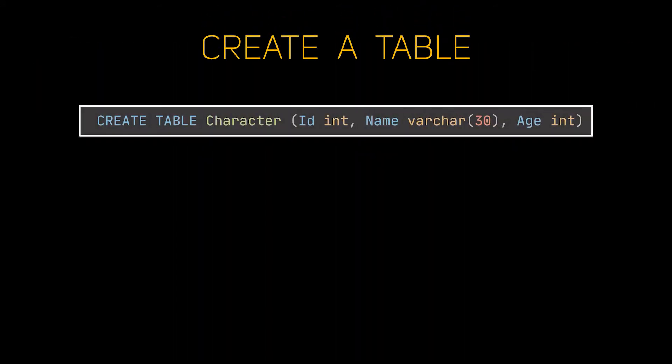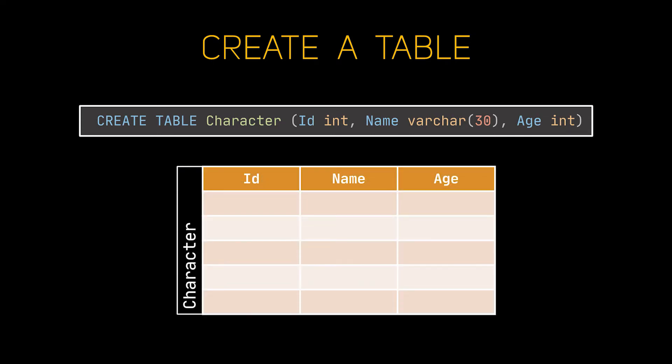This statement will allow us to create a table in our database, and it expects the name of the table along with the columns we want to create and their respective types as arguments. As you can see here, we are creating a table named 'character' with three columns: the id of type integer, the name which is a string having 30 characters at max, and the age of type integer also. If you need to create a column with type double, you have to specify float in there because the double keyword is not a thing in SQL.